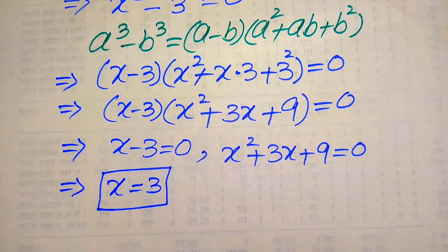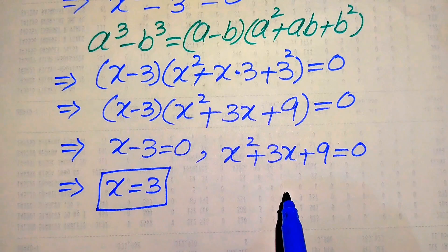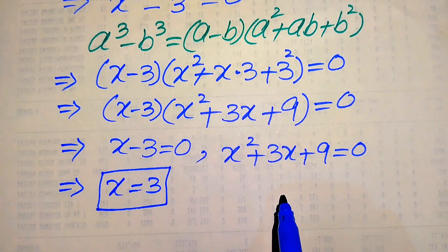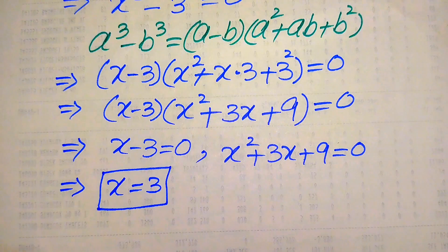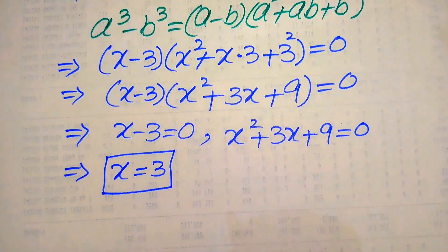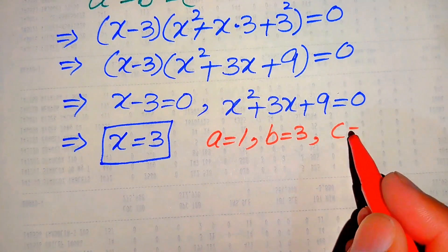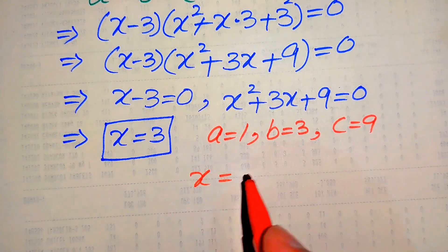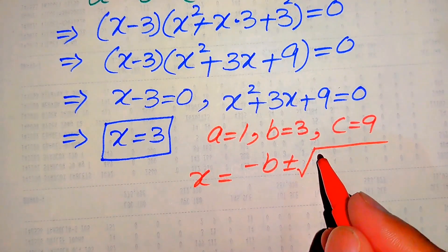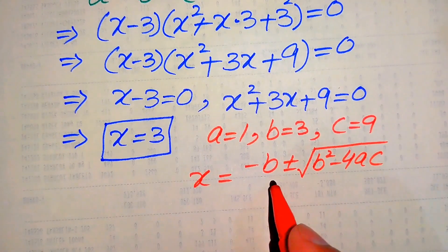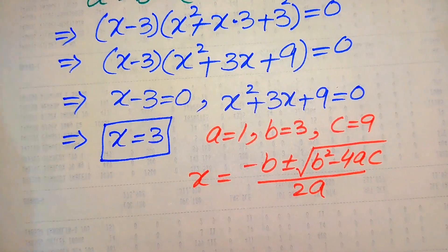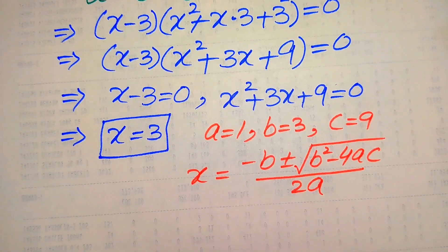Since the given equation is cubic, it has three roots. To find the other two, we solve the quadratic equation x squared plus 3x plus 9 equals zero. There are three methods — factorization, completing the square, or the quadratic formula. Here we apply the quadratic formula. The coefficients are: a equals 1, b equals 3, and c equals 9. The quadratic formula is x equals minus b plus or minus the square root of b squared minus 4ac, all divided by 2a.